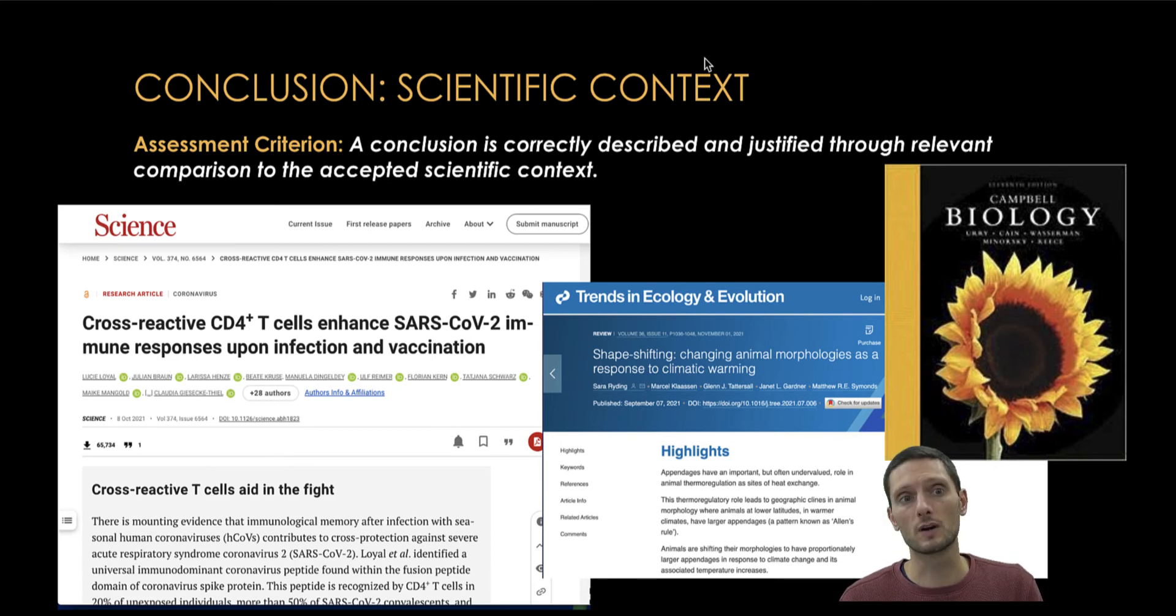The best source and the primary source would be results from an actually published research article. These can be most easily obtained, and I would encourage you to use Google Scholar. It's like Google, but just for published journal articles. You can search for different topics and concepts and find research articles that are associated with a particular topic for the lab that's being investigated. That's the best source for this comparison to scientific context.